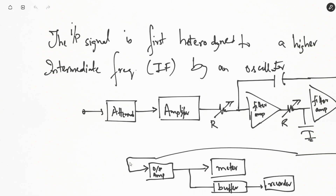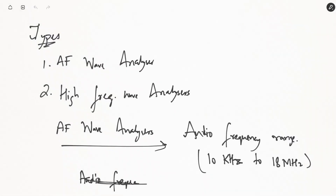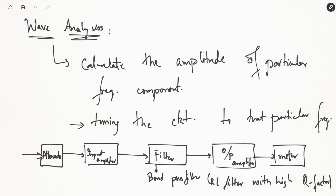Wave analyzers simply help us calculate the amplitude of a particular frequency component of any AC waveform. Any AC waveform is comprised of multiple frequency components: the fundamental frequency, 2f, 3f, 4f, 5f, and so on. If we want to calculate the amplitude of the 5f component, that is what a wave analyzer helps us do — by tuning the circuit to that particular frequency and passing it through a band pass filter, which takes care of only that frequency component while all others are rejected.